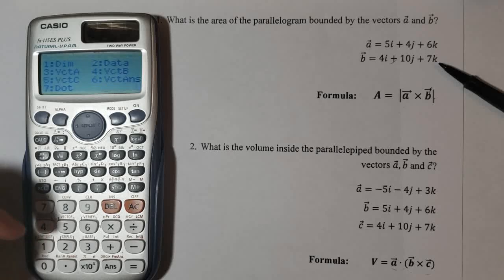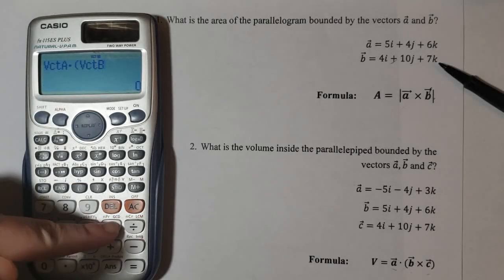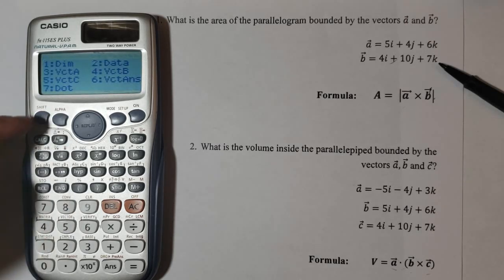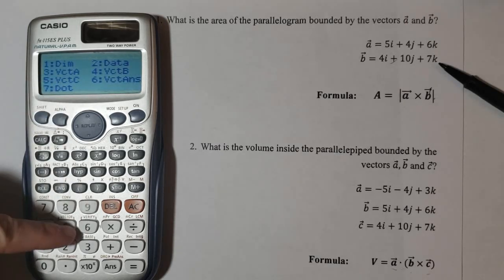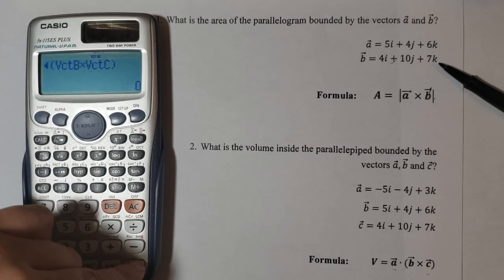Shift again. Vector. We choose 4 for vector b. Then cross product with vector c. Shift again. Vector. Option 5 for vector c. Close the parentheses. And then just press equal.